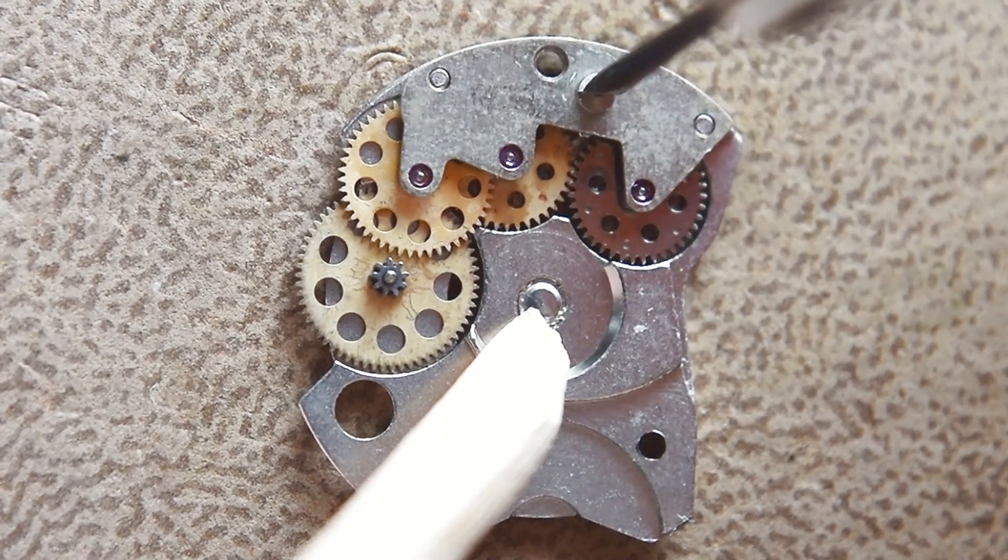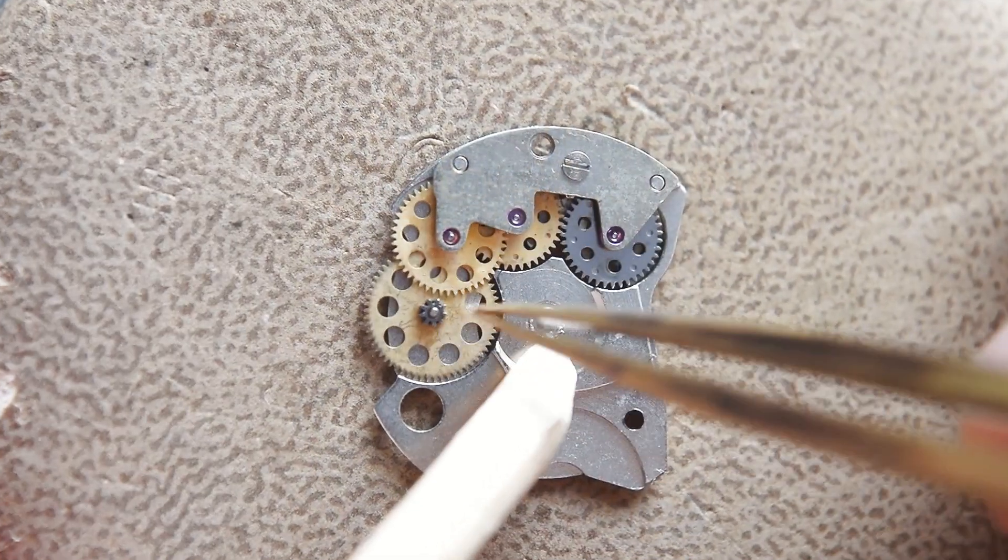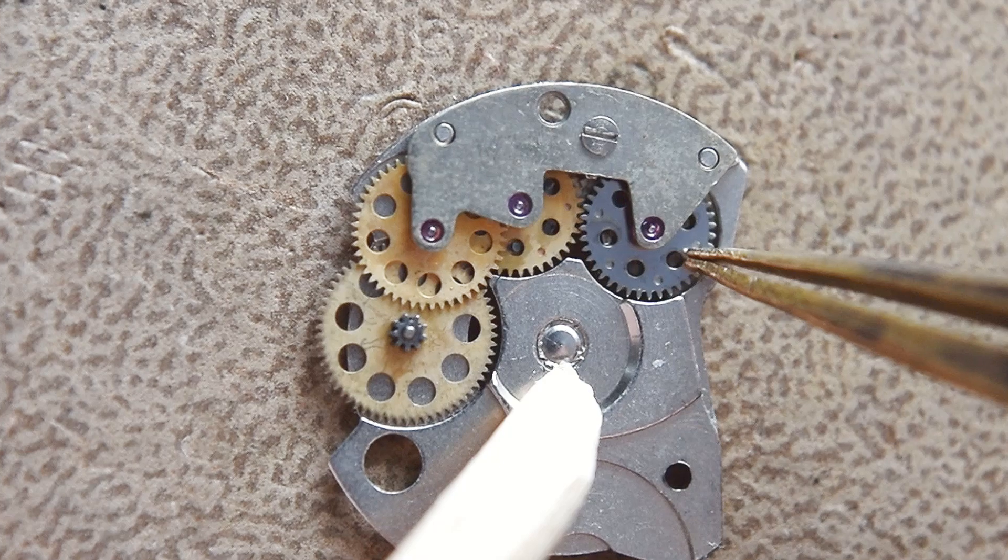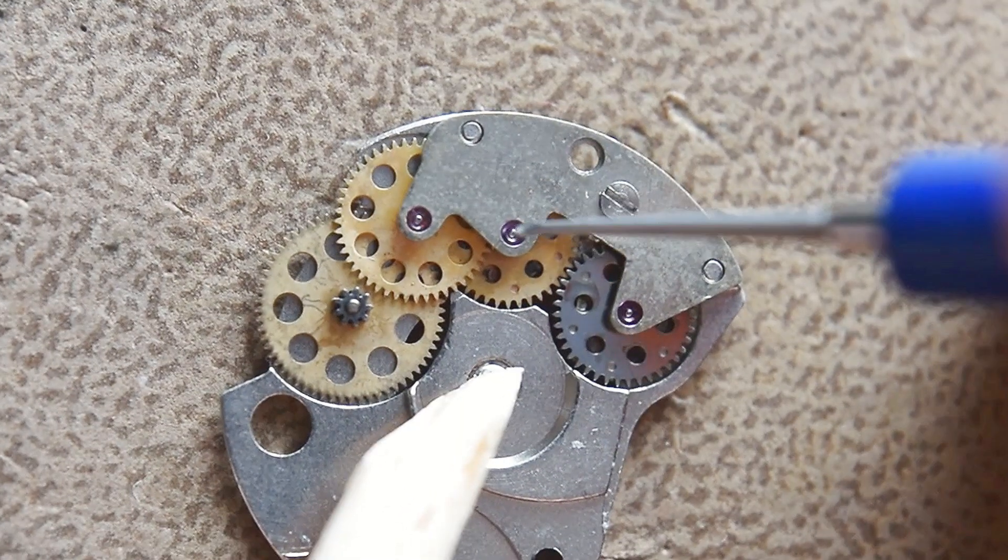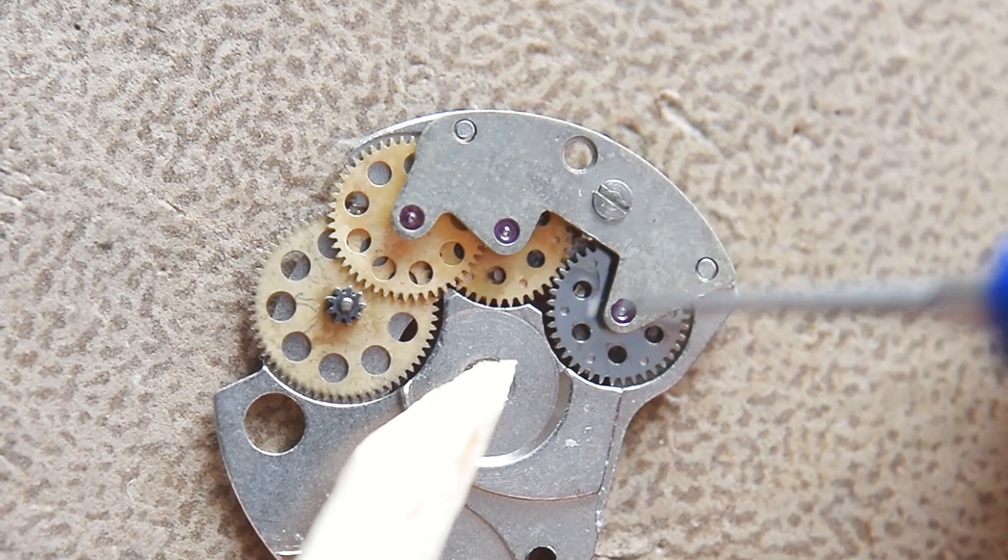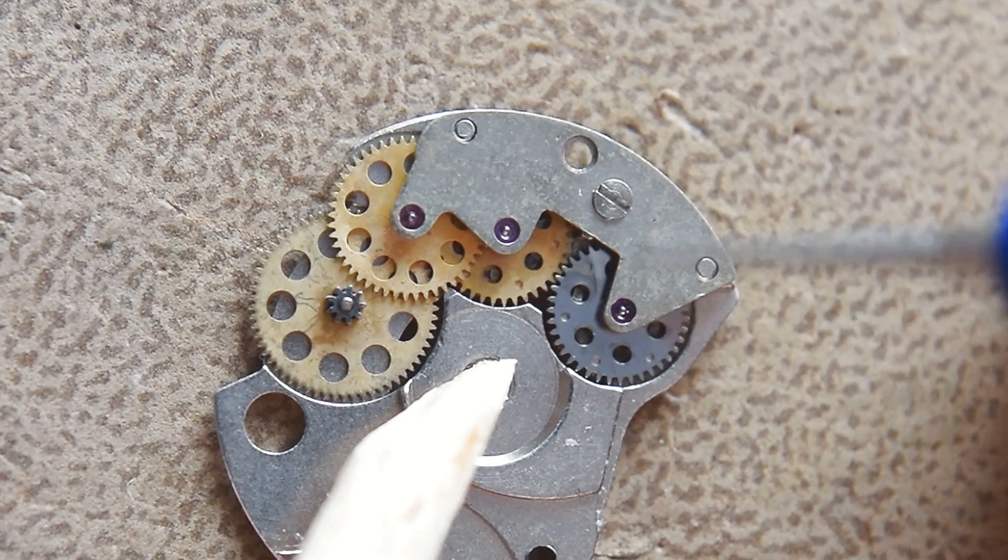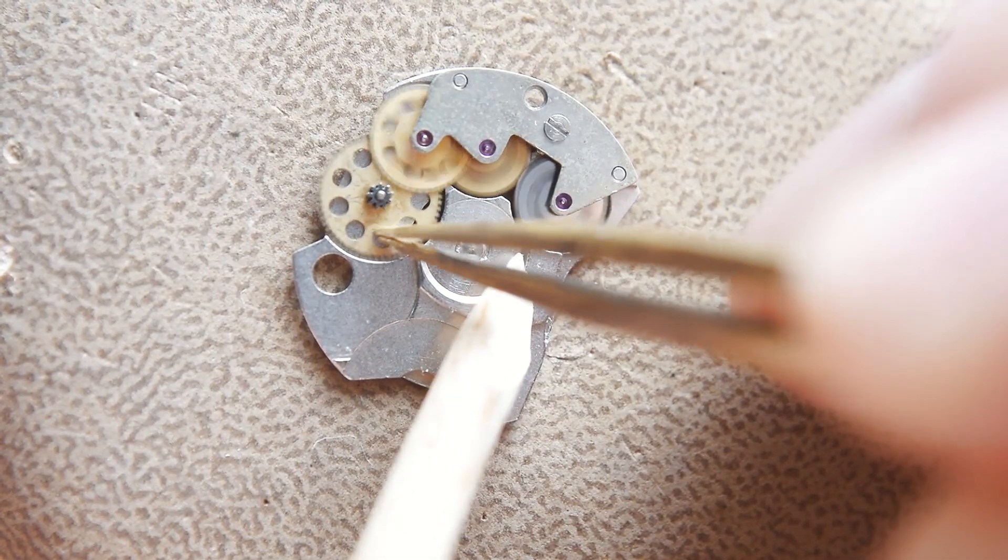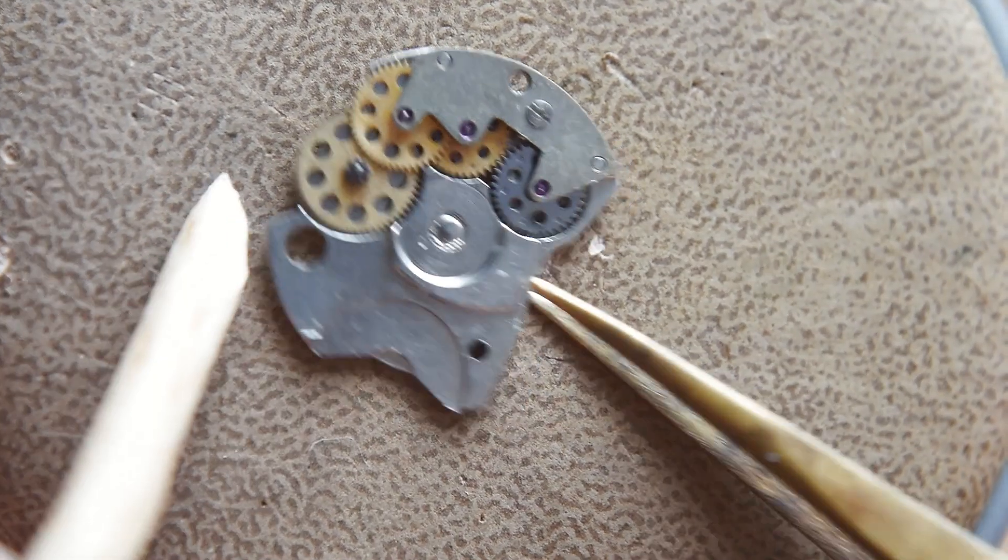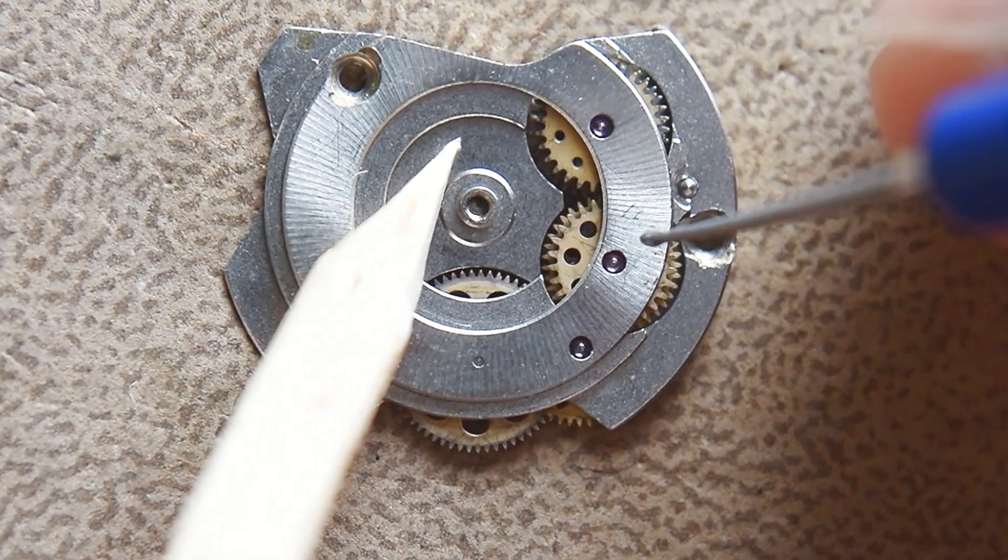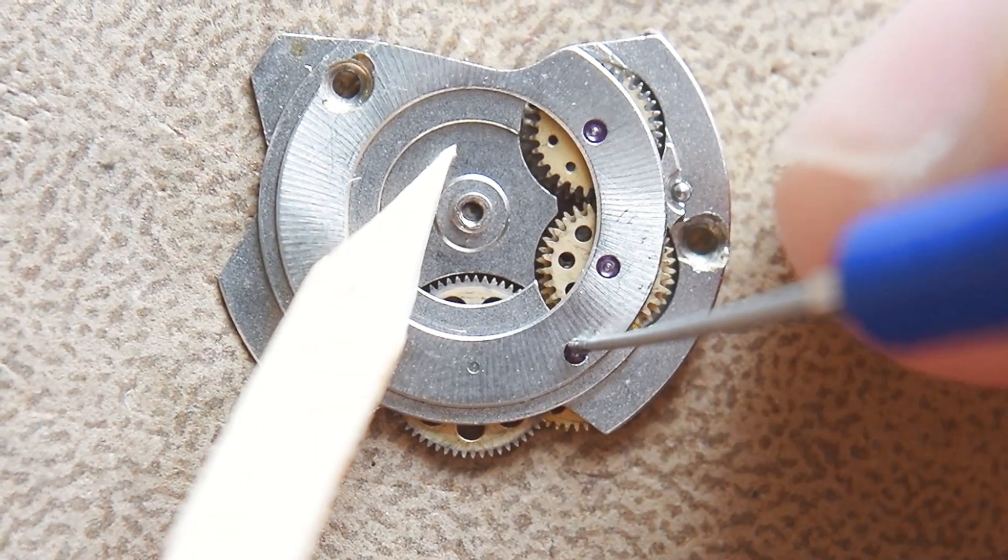Oiling. And this is the bridge that holds the wheels. And the screw. Let's check it, I think everything works perfect, oiling only the pivots. I think it's finished this part, let's move on with our ETA 2790.